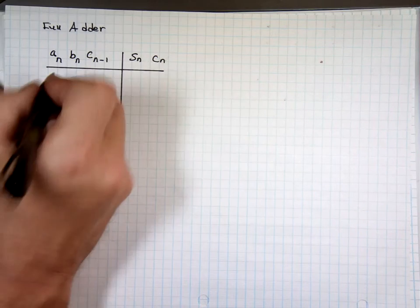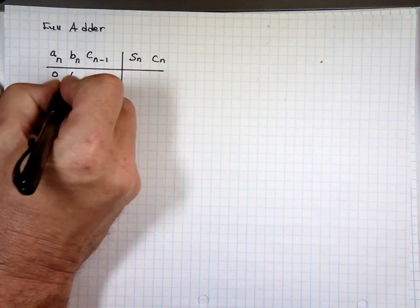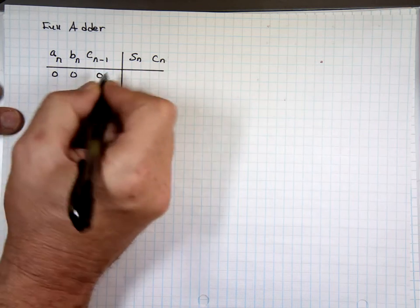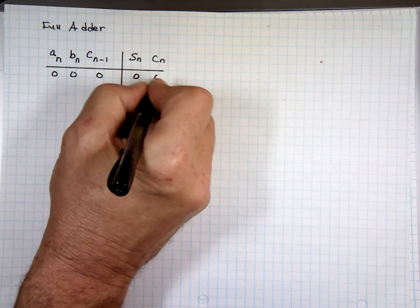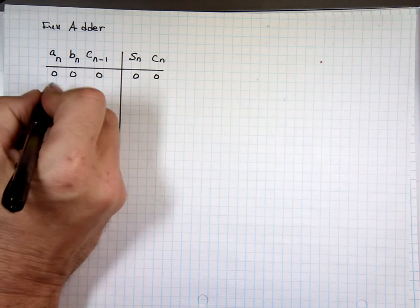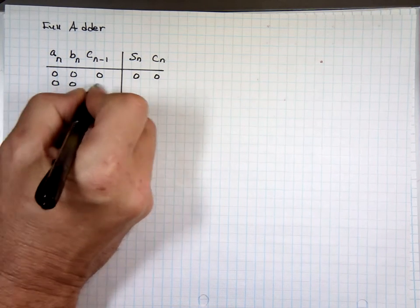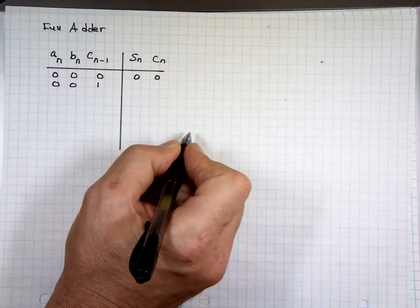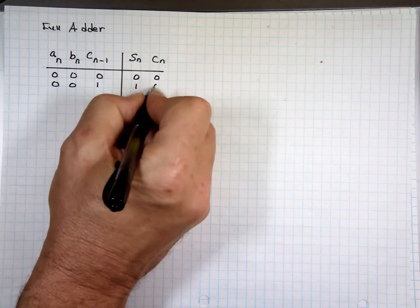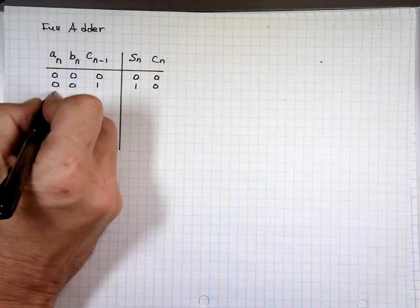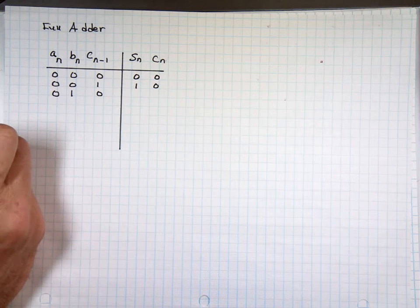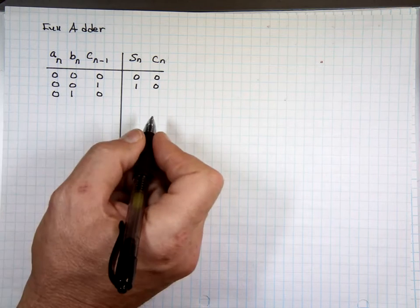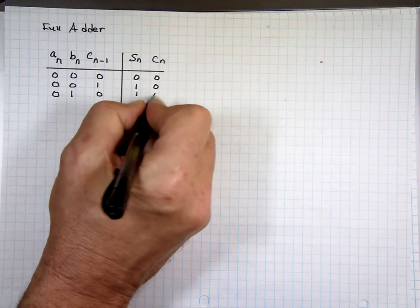And if A is 0, B is 0, and the carry from the previous state is 0, what's 0 plus 0 plus 0? Zero and there is no carry going out. What about if you have 0, 0, 1? One and no carry going out. What about if you have 0, 1, 0? Isn't that a 1 when you add the three numbers? That's 1, no carry.